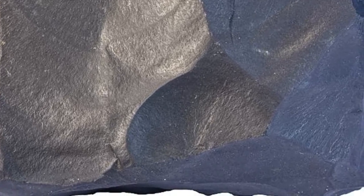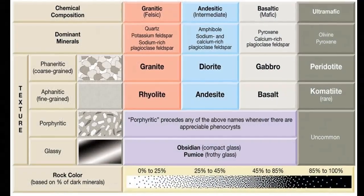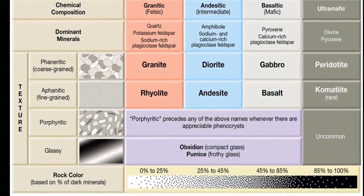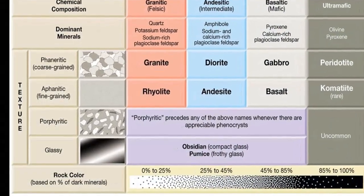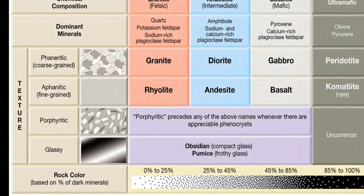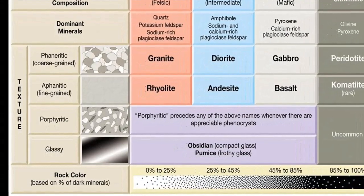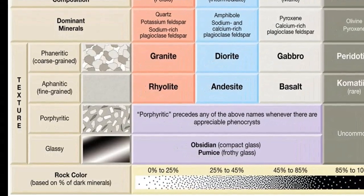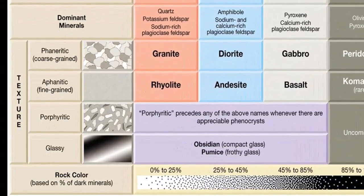Lava flows composed of obsidian a few hundred feet thick occur in some places. Thus, rapid cooling is not the only mechanism by which glassy texture can form.